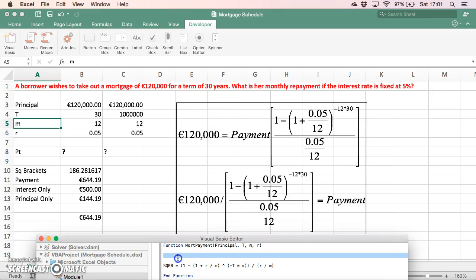Now I need to calculate the square brackets, and then the mortgage payment equals the principal (that's the €120,000) divided by the square brackets (sqrb). Let's see if that function actually works. I'll copy this and close this down.